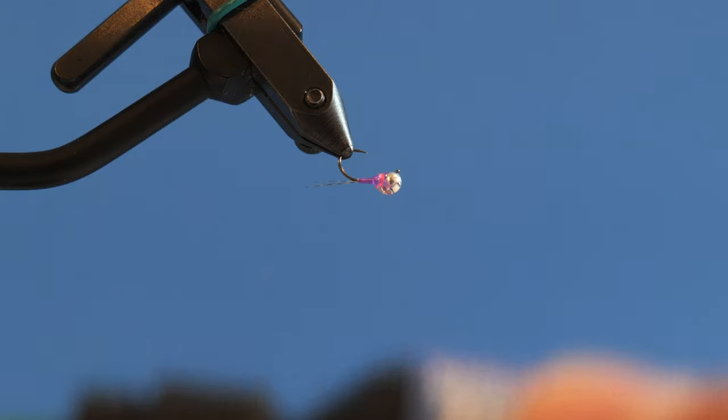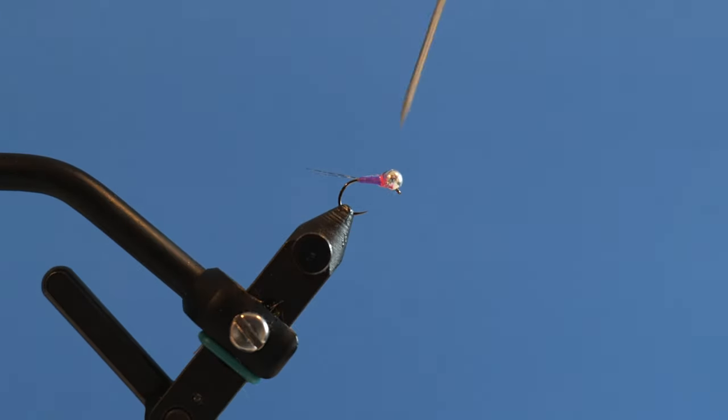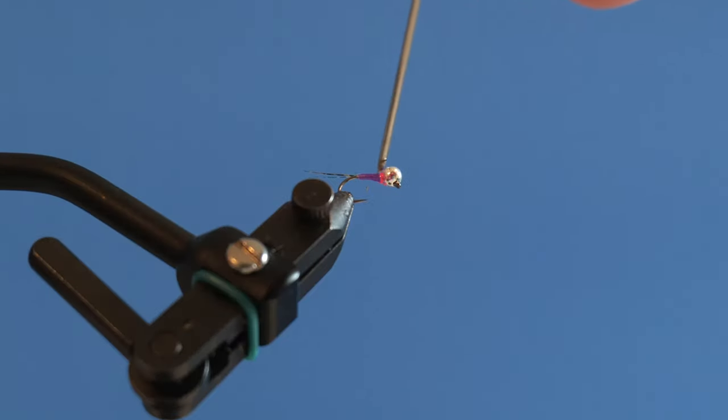I like to add it right in the bead slot to fill that up and then a little bit on the back. So that's going to be a lot of resin but I'm going to wipe a lot of it off. So I'm just kind of going to spread this around with my bodkin here.